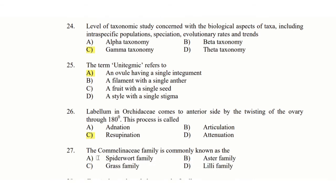27th question: The Commelinaceae family is commonly known as — option A: spider wort family, option B: aster family, option C: grass family, option D: lily family. The answer is option A: spider wort family.